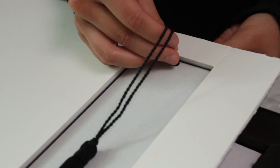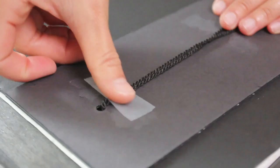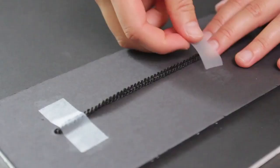Now to frame your tassel, simply insert its hanging cord through the hole and tape it securely on the back of the mounting board.